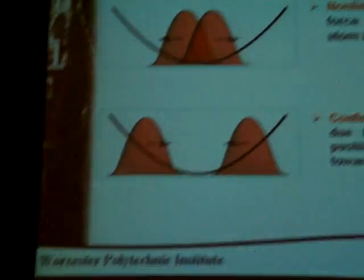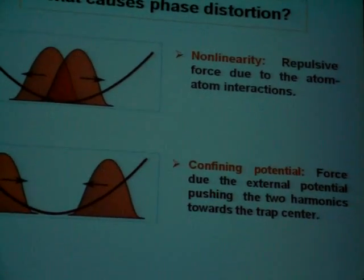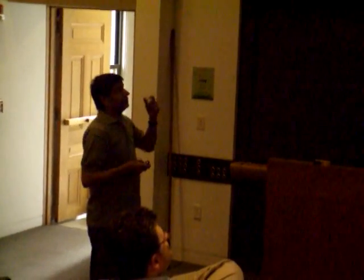Here we are observing what happens to the phase distortion — basically what is the coherence time in this kind of interferometer. There are two forces which cause phase distortion: the first one is non-linearity, due to atom-atom interactions in the Bose-Einstein condensate, and the second one is the confining potential, due to which the force is toward the center of the trap.